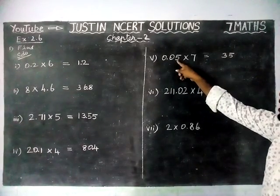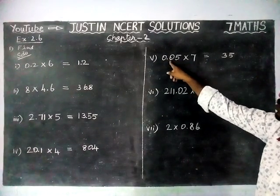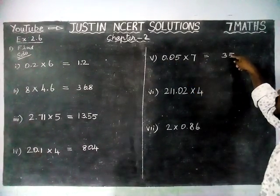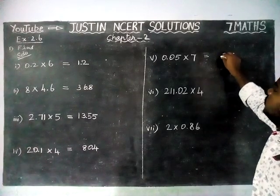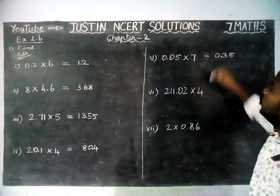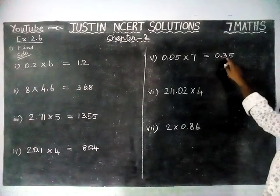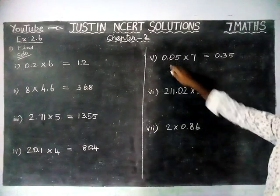And here we have to make two decimal places. So one, two decimal places is there. From here, one, two. So two decimal places. Now we will add the whole part as 0. 0.35 is answer for fifth question.